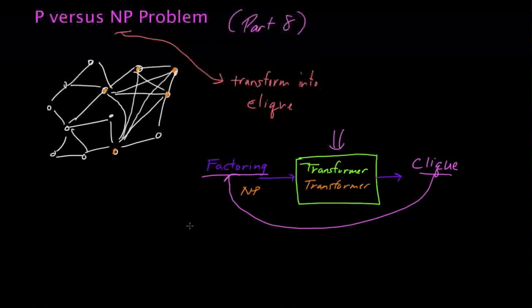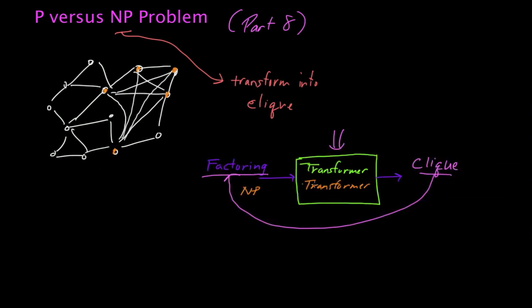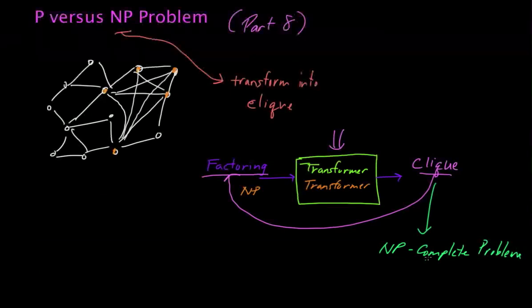It's like this universal NP problem. We actually have a term for this in theoretical computer science. We call problems like this that have this transformer, that have this kind of universal nature, we call them NP-complete problems. Any problem in NP that has this universality, where any other problem in NP can be converted to that problem, such that the solution to the NP-complete problem will lead to the solution to the original problem, that new problem is then called NP-complete.